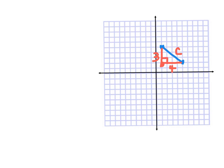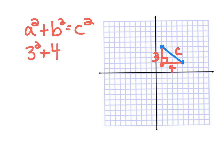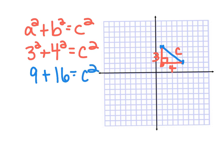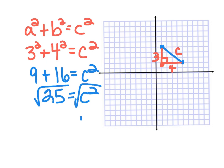Now I can draw in my triangle and count the legs. The horizontal leg is one, two, three, four — four units long. The vertical leg going up is one, two, three — three units long. I don't know this side, so I'll call it C — that's the hypotenuse, across from the right angle. Since I have a right triangle I can use the Pythagorean theorem: three squared plus four squared equals C squared. Three squared is nine, four squared is 16, so nine plus 16 equals C squared, giving 25 equals C squared. Taking the square root of both sides: C equals five.